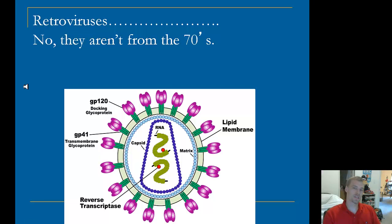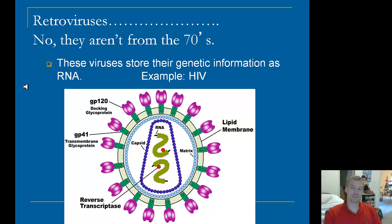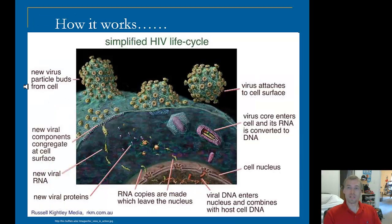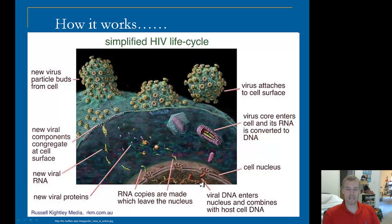We also have things called retroviruses — and no, they're not from the 70s. These viruses store their genetic information as RNA rather than DNA. A good example is HIV. In the HIV life cycle, the virus attaches to the cell surface and releases its RNA into the cell. Since cells use DNA as their genetic material, the RNA has to be converted into DNA — which is why the enzyme is called reverse transcriptase. The DNA is then incorporated into the nucleus, RNA copies are made, bundled with new virus proteins, and a new virus is formed and sent out.